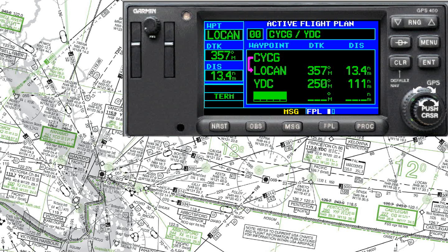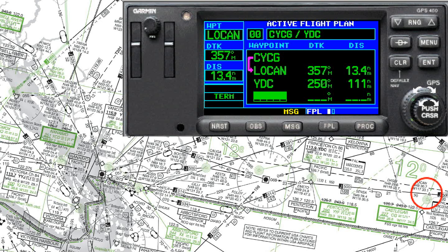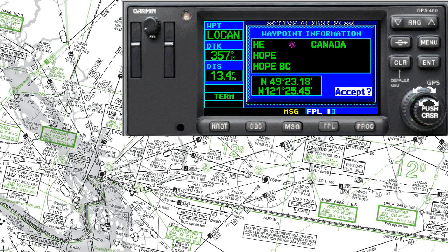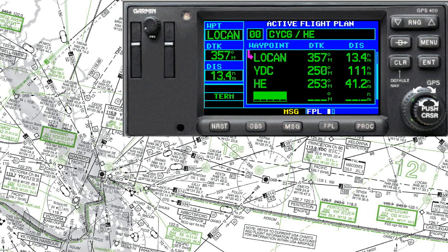Welcome to another IFR video. This time I'm going to show you how to load an RNAV STAR into the 430W, then load the ILS approach that goes with it, and then close the STAR. For this particular example we're going to begin with a flight plan from Castlegar to Abbotsford. We've got CYCG, the Castlegar airport, LOCAM as the first waypoint on the airway, YDC the Princeton VOR, then HE for Hope — check the latitude and longitude — and then put in the Abbotsford airport CYXX.